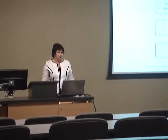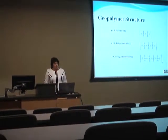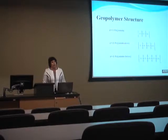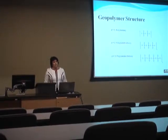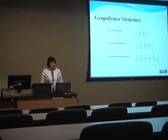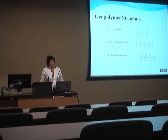The geopolymerization process includes three basic steps: dissolution, gelation, and transformation with formation of the final gel. Geopolymer materials have different structures, which explains their different properties — we talk about polysialate, polysialate-siloxo, and polysialate-siloxo extension structures.